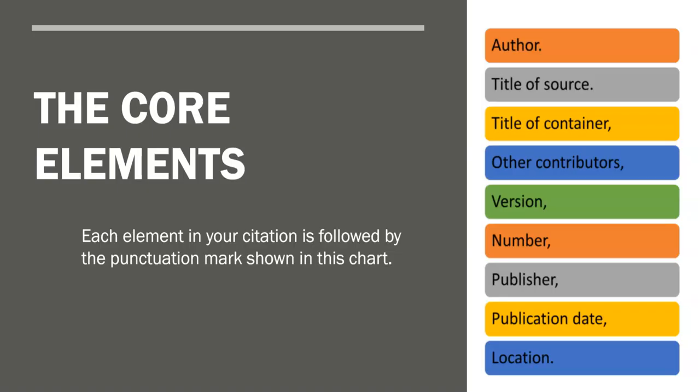The ninth edition of MLA was updated in 2021 with a universal set of guidelines to include digital publications. The elements in the chart are listed in the order they should appear in your citation, and each element is followed by the punctuation shown. Some elements are optional, depending on the source you're citing — I'll point some of those out in the following examples.